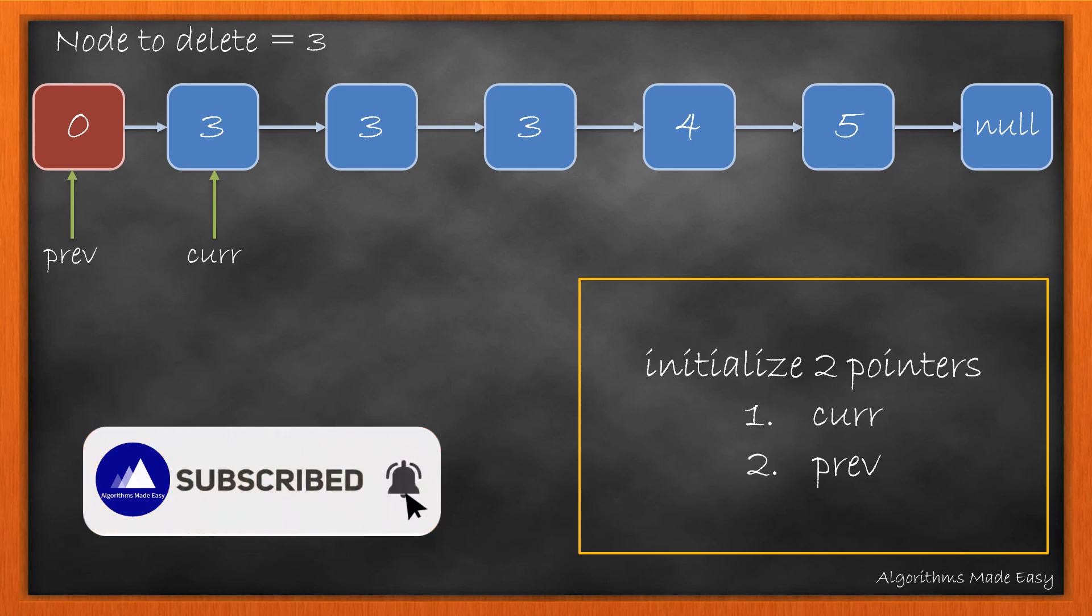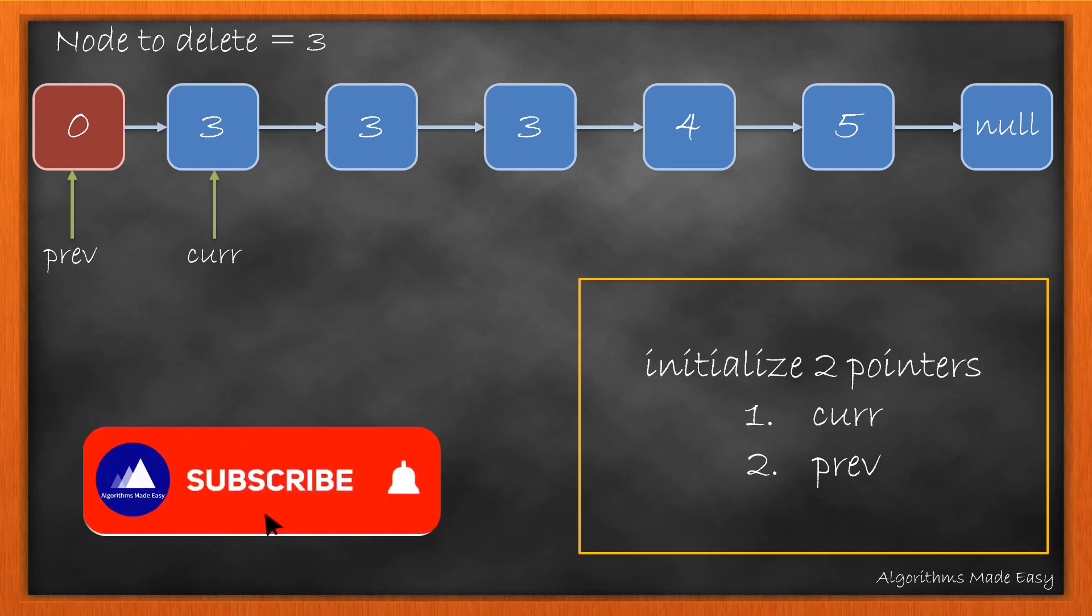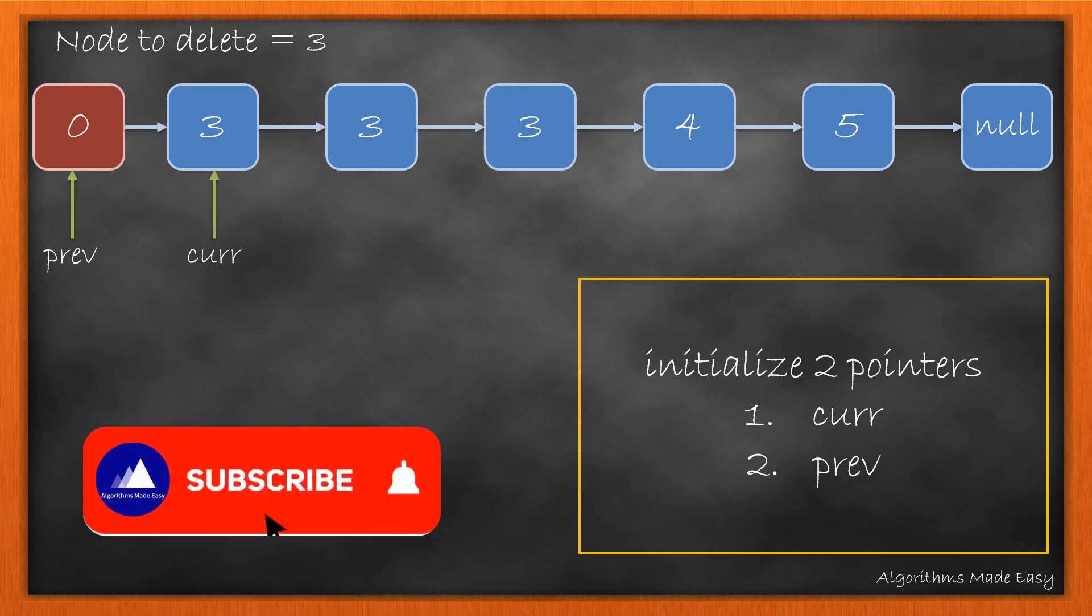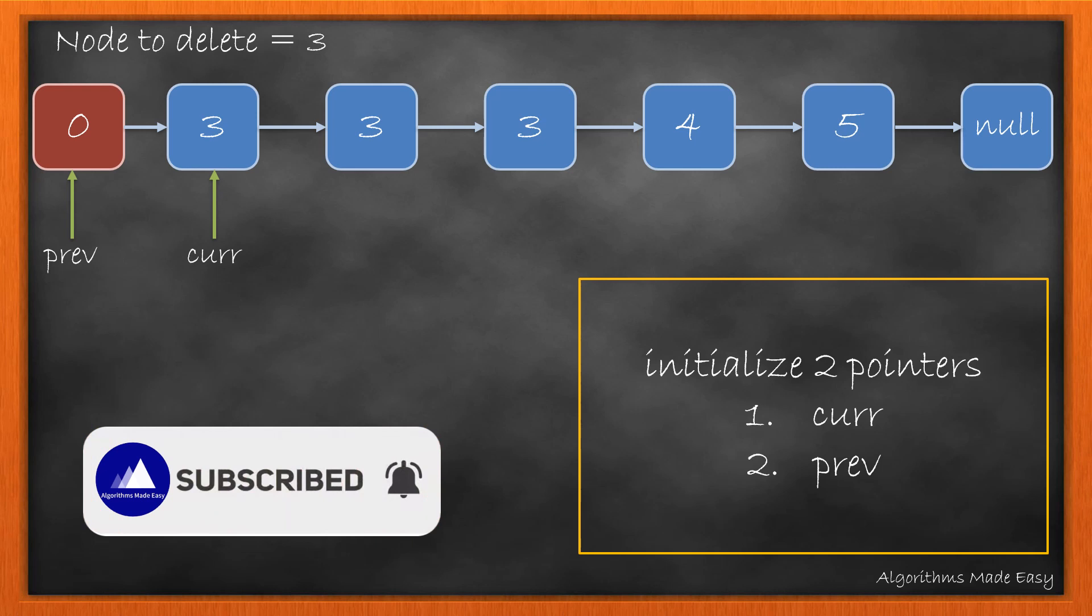Now, we will take two pointers, one to track the previous node and the other to track the current node. Initially, the previous will be at the sentinel node and the current will be at the actual head of the list.